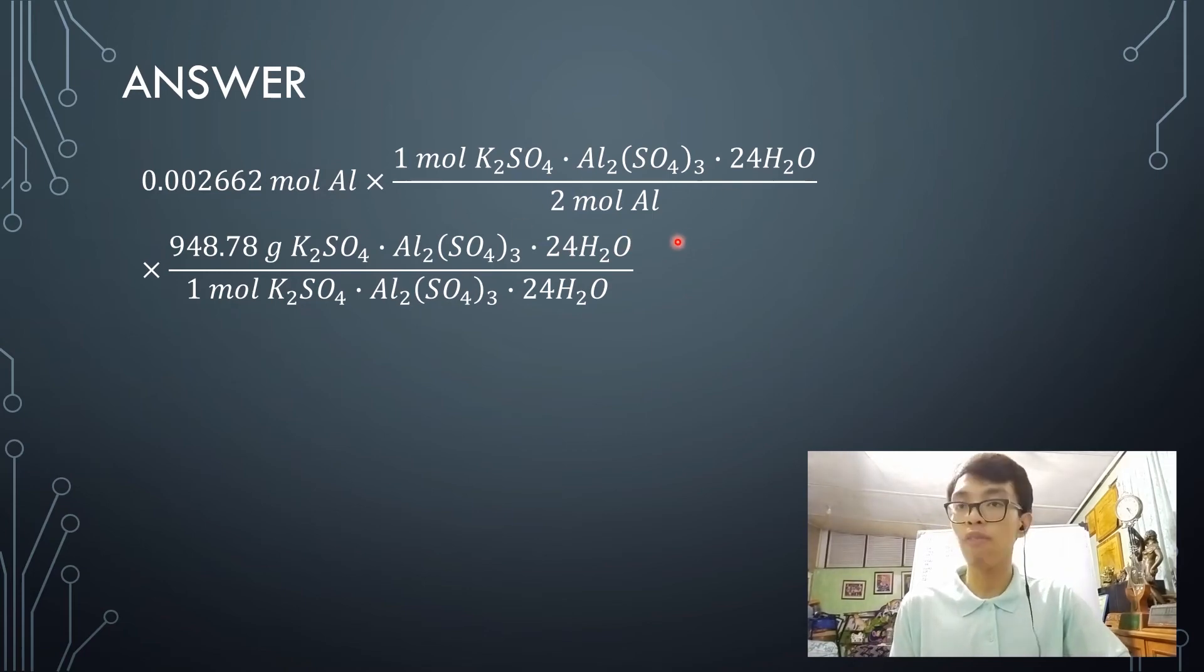Why 2 moles of aluminum? Again, look at the formula. How many aluminums are there in the alum, in the formula for alum? 2. So, therefore, per 1 mole of alum, there are 2 moles of aluminum.